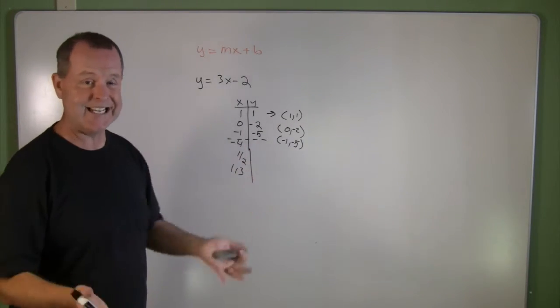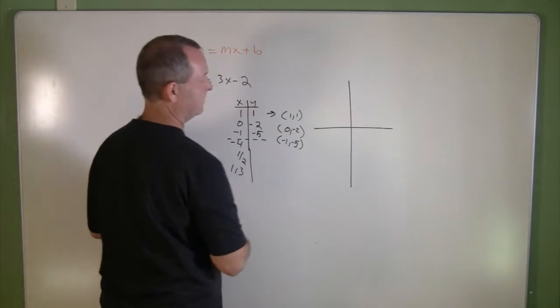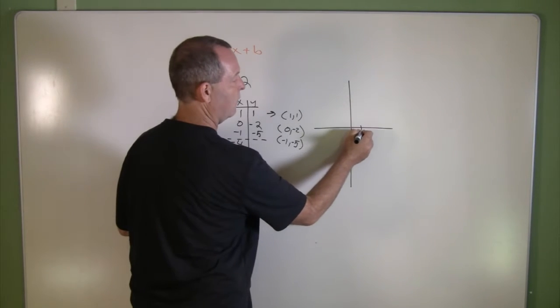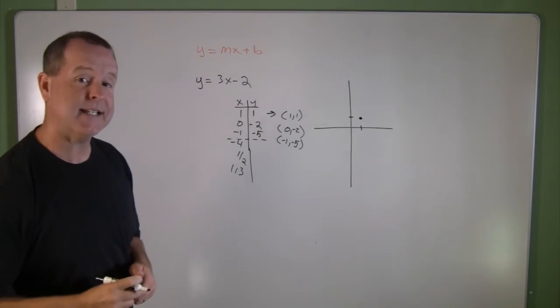So I'm going to draw my xy coordinate plane. I know I had the point 1 and 1, over 1, up 1. That's one point that exists on the graph.